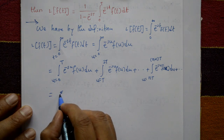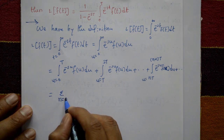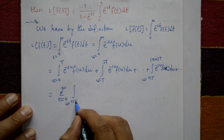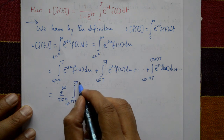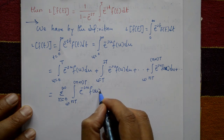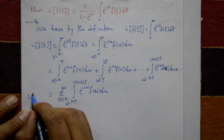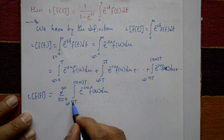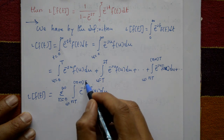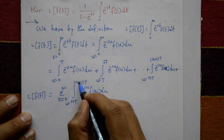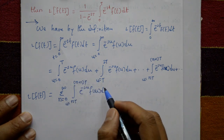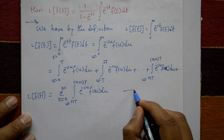We write these terms in a summation: summation n from 0 to infinity of the integration from u = nT to u = (n+1)T of e to the power minus su times f(u) du. When n = 0, the limits are 0 to T; when n = 1, the limits are T to 2T — giving the first term, second term, third term, and so on. This is equation number one.